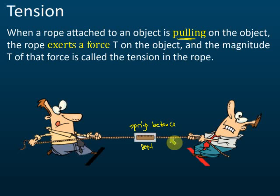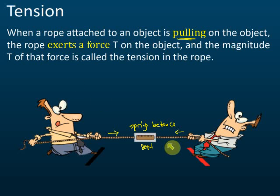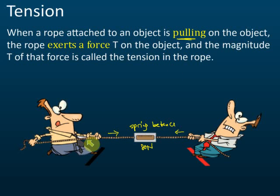Now, the direction of tension: for the man on the left-hand side, he will feel the tension pulling him to the right, because tension is always a pulling force. For the man on the right, the tension pulls him to the left. So always remember, tension is a pulling force — if a man pulls the rope, the rope gives tension back to that man, pulling him in the opposite direction. You need to know that tension is a pulling force and you need to know the direction of tension.